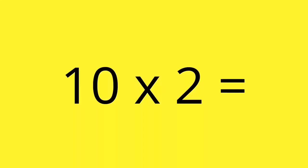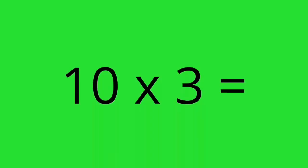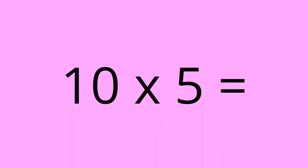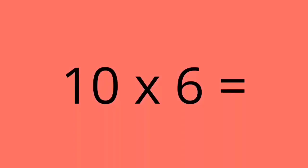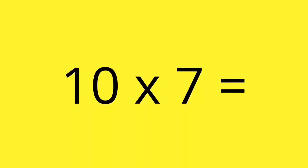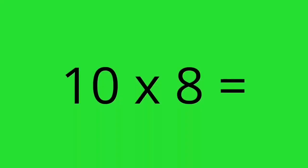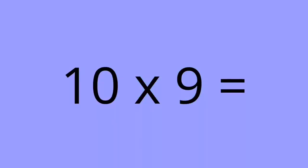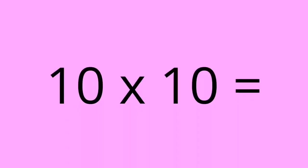10 times 1 equals 10. 10 times 2 equals 20. 10 times 3 equals 30. 10 times 4 equals 40. 10 times 5 equals 50. 10 times 6 equals 60. 10 times 7 equals 70. 10 times 8 equals 80. 10 times 9 equals 90. 10 times 10 equals 100.